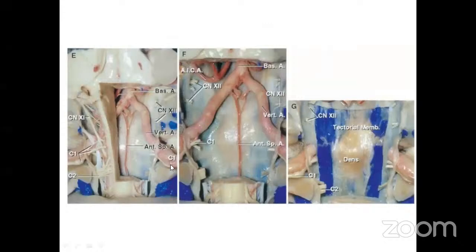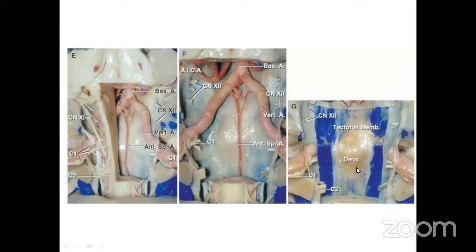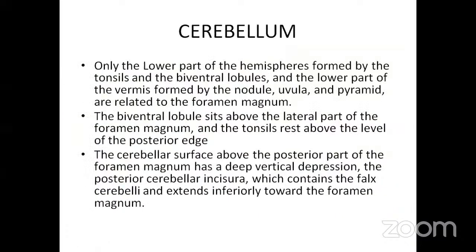In further dissection, the two vertebral arteries join to form the basilar artery and give rise to the anterior spinal artery running centrally. Only the lower portion of the cerebellum — including the tonsils, bivental lobules, and lower vermis (nodule, uvula, and pyramid) — is related to the foramen magnum. The bivental lobule sits above the lateral part of the foramen magnum, and the tonsils rest above the posterior edge.